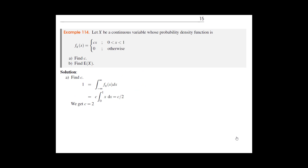Let's do a simple example. They give you a PDF f(x), typically defined with brackets to specify the sample space. Here the sample space is between zero and one, and f(x) is zero everywhere else. First, find the constant c: integrate f(x) and make it add up to one. In this case, c equals two. Then compute the expected value by integrating 2x · x = 2x² over the sample space from zero to one.